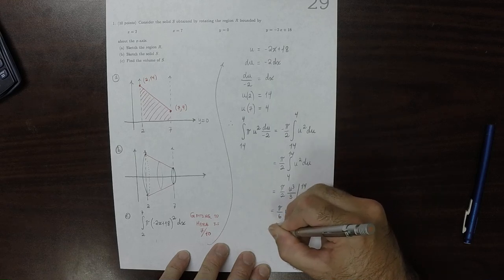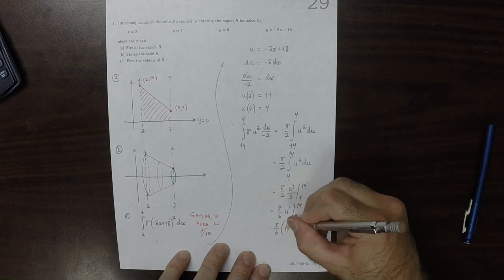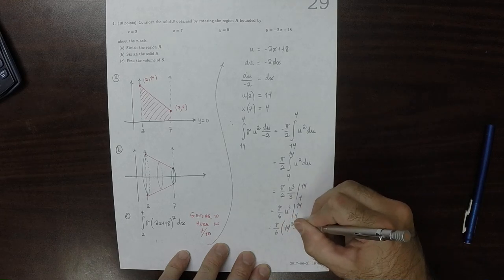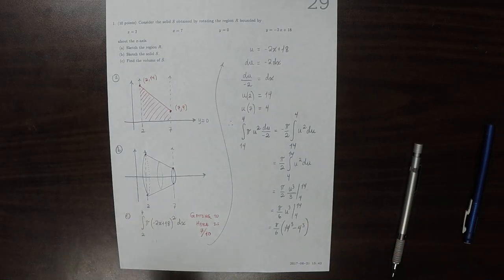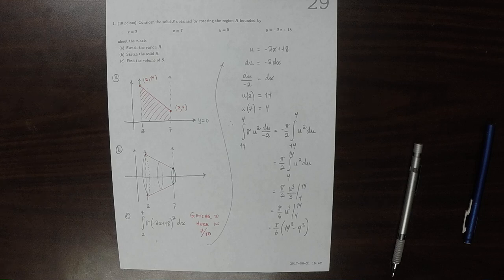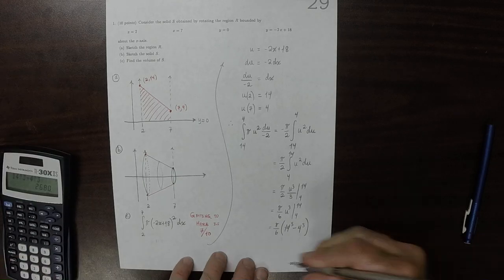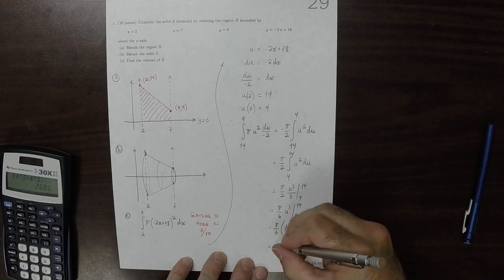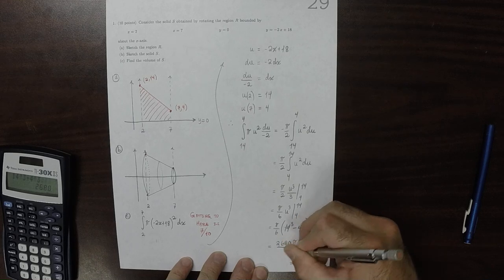So pi over 6 times 14 cubed minus 4 cubed. Well, 14 cubed minus 4 cubed is 2680. So that's 2680 pi over 6.